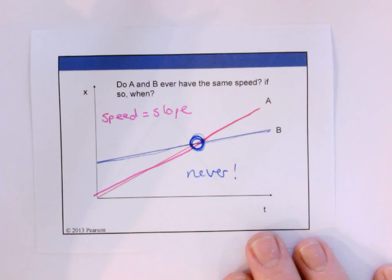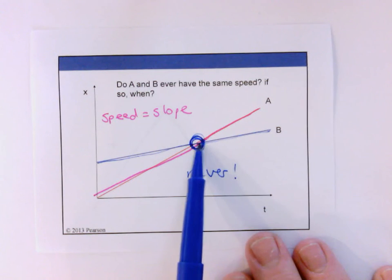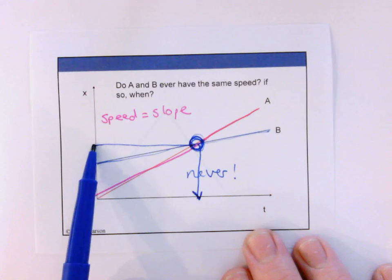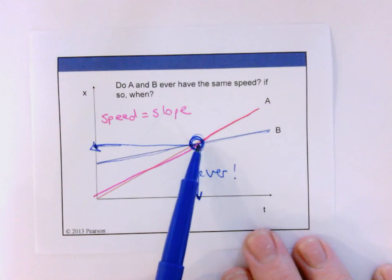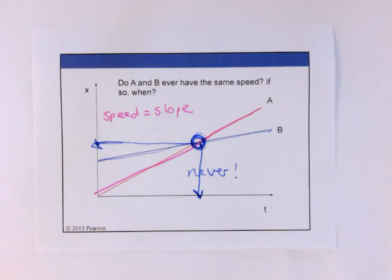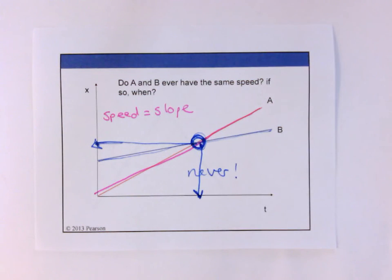Finally, here are two straight lines on a position versus time graph — a bit like Alan and Beth, but leaving from different positions rather than different times. The question is: do A and B ever have the same speed? Speed is slope — the steepness of the graph. Line A has a relatively steep slope and line B has a less steep slope. Those slopes are constant and not the same, so they never have the same speed. They do share a common point where they intersect — but at that intersection what's the same is their position, not their speed. To have the same speed they'd have to be parallel lines.